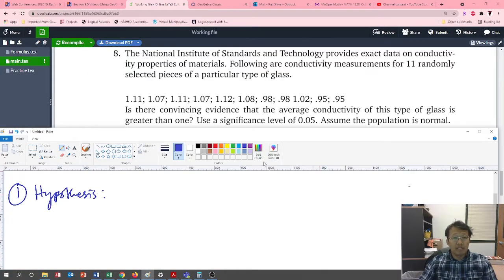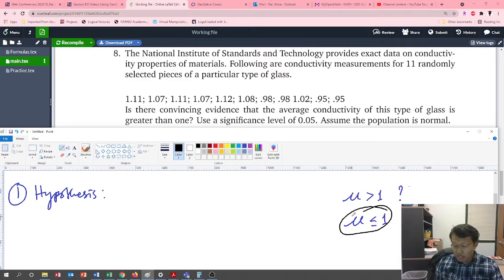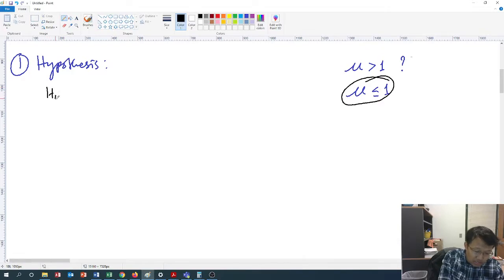Here it is simply saying that is there convincing evidence that the average conductivity of this type of glass is greater than one. So average means μ is greater than one, that's the question. Now opposite of this one is less than or equals to one. This expression which involves the equality sign is the null hypothesis. So write that down: μ is less than or equals to one is the null hypothesis, and of course this contradictory statement is the alternative hypothesis.